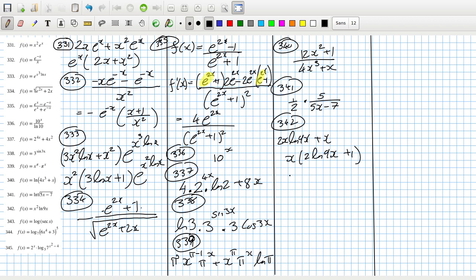343, and that's log base 10 I'm assuming. So I can change that into natural log secant, which is 1 over cos x, over natural log 10. So that would be minus natural log cos x over natural log 10. The derivative would be minus sin x over cos x over natural log 10, so that would be tan x over natural log 10.